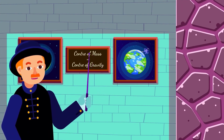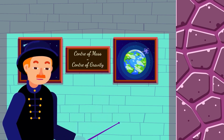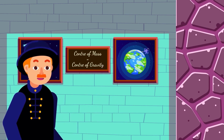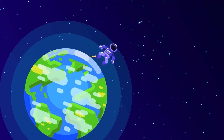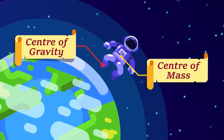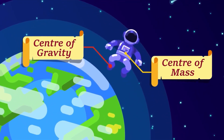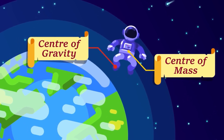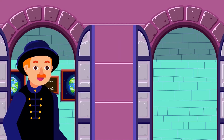Hence, we can use the term center of mass and center of gravity interchangeably, assuming they refer to the same point. But if the object gets further from Earth, the gravitational field gradually decreases, causing a non-uniform gravitational field and a difference in the position of the center of gravity and the center of mass of the object.